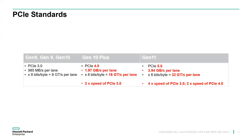PCIe Generation 3 was the standard for Gen 8, Gen 9, and Gen 10, providing 985 megabytes per second maximum speed across a single PCIe lane — that's 8 giga-transactions per second per lane. We moved up to PCIe 4.0 on the Gen 10 Plus and then to PCIe 5.0 on Gen 11. In both transitions the bandwidth doubled, going from 985 MB/s to 1.97 GB/s to 3.94 GB/s per lane.